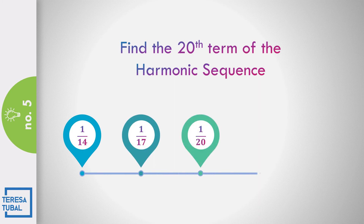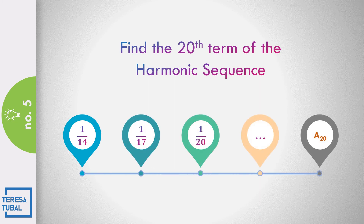Question number 5: Find the twentieth term of the harmonic sequence 1/14, 1/17, and 1/20. Correct — the answer is equal to 1/71.